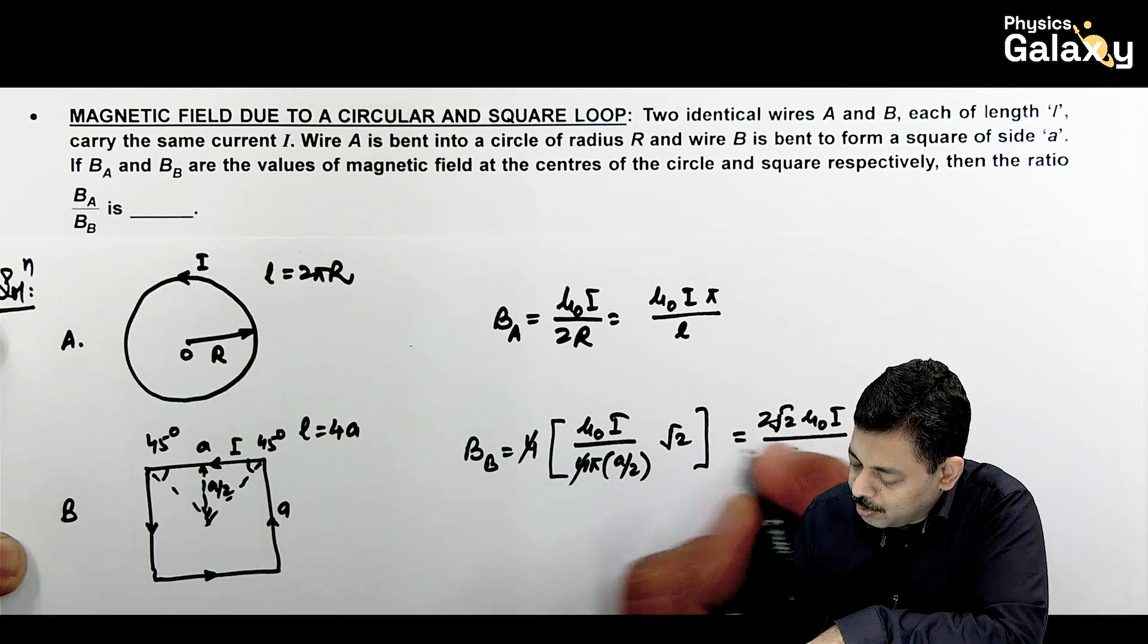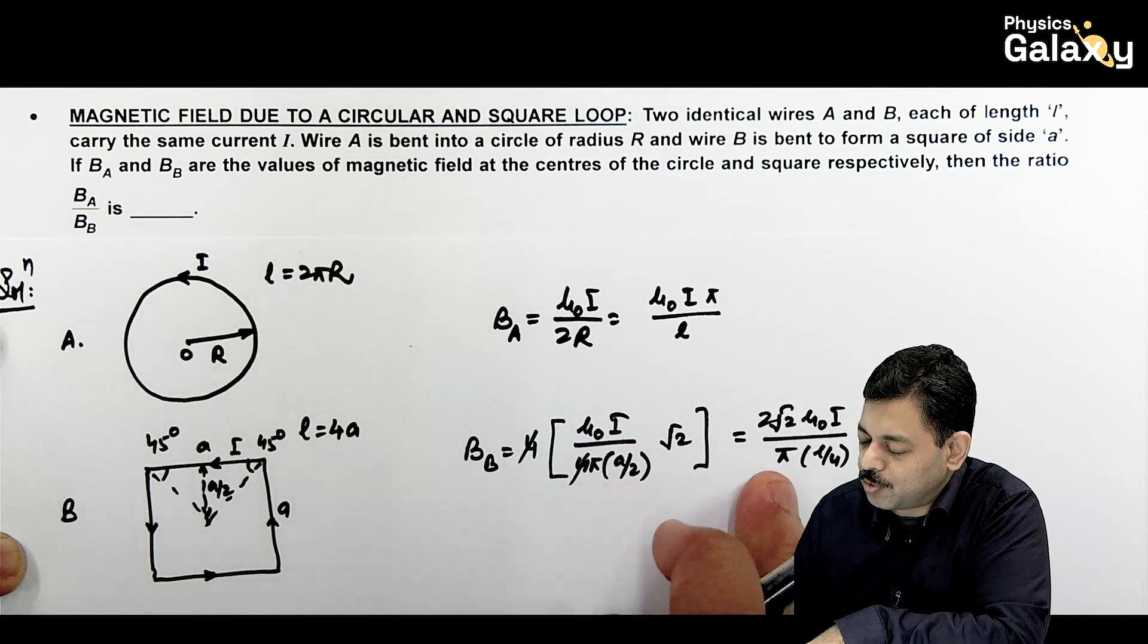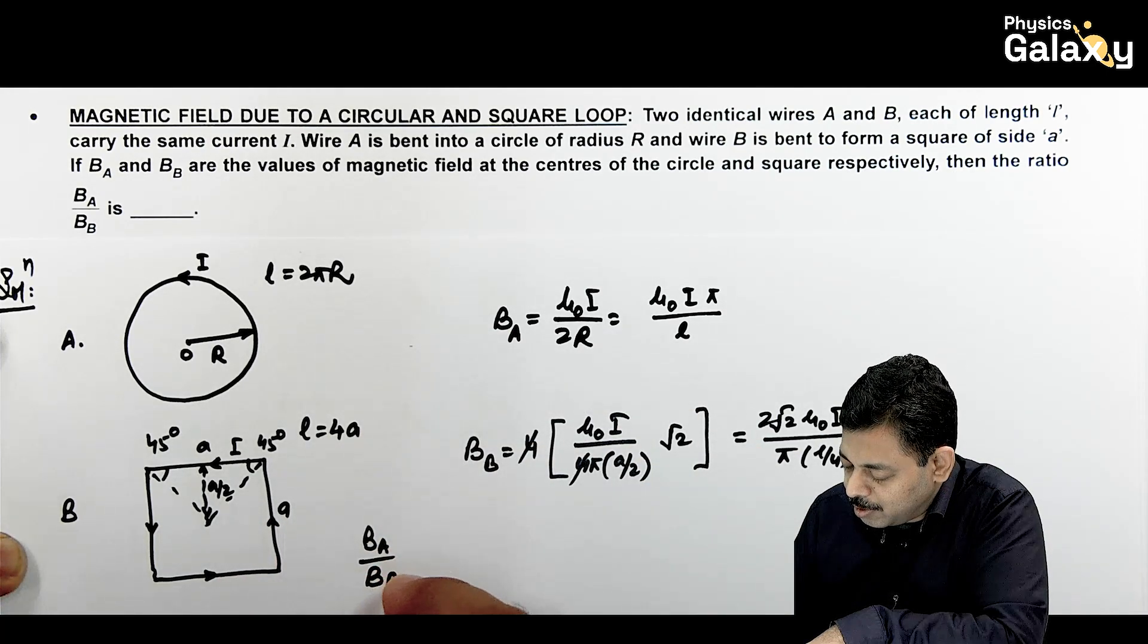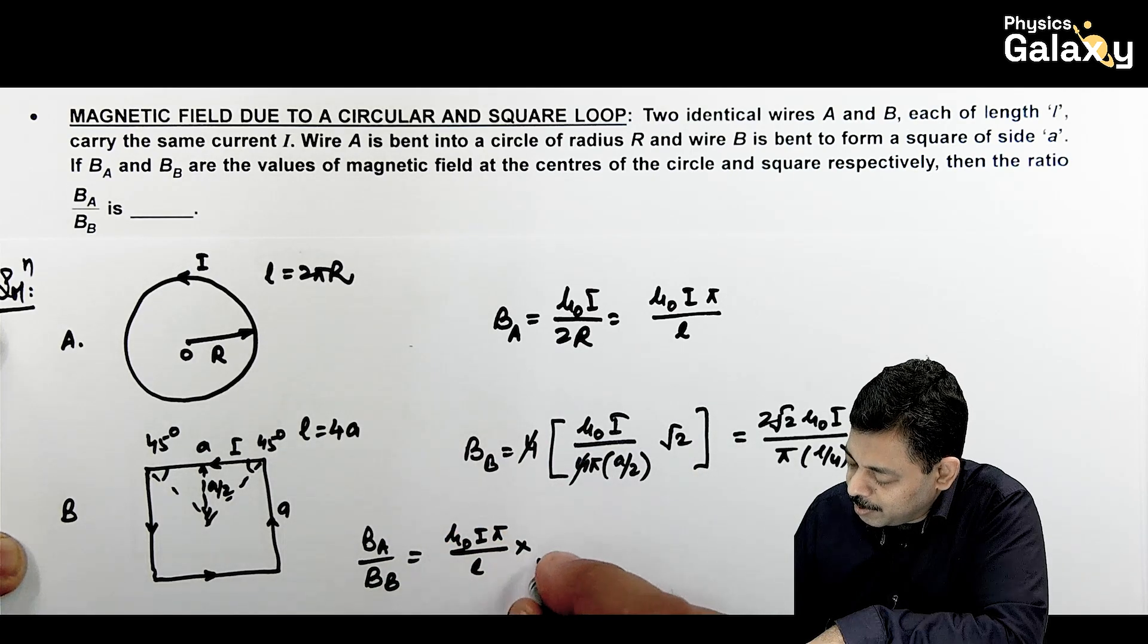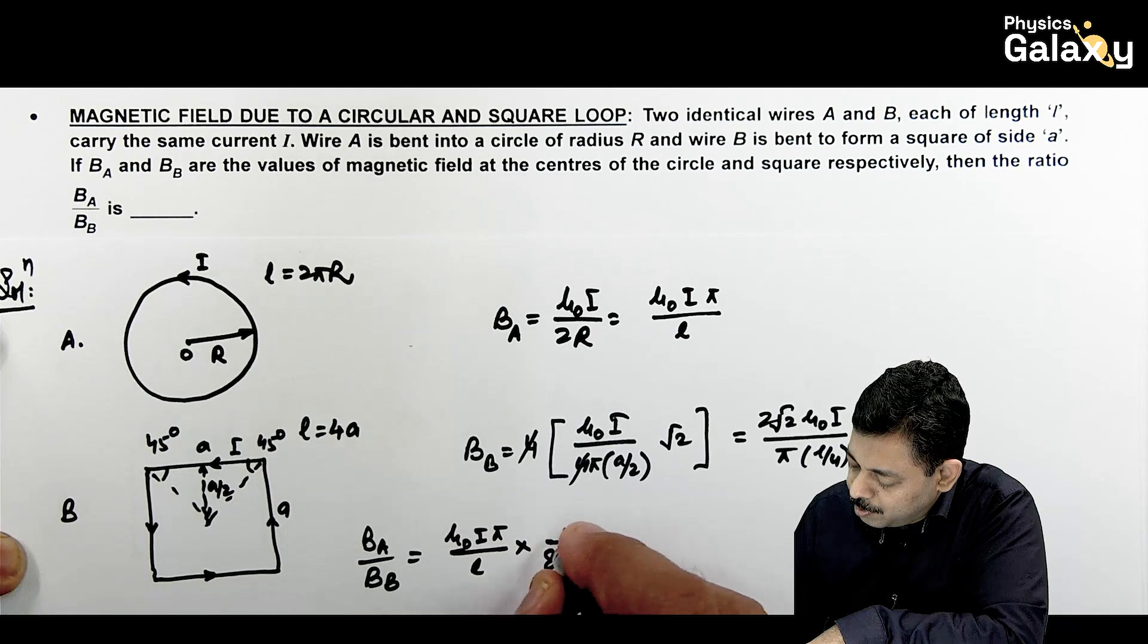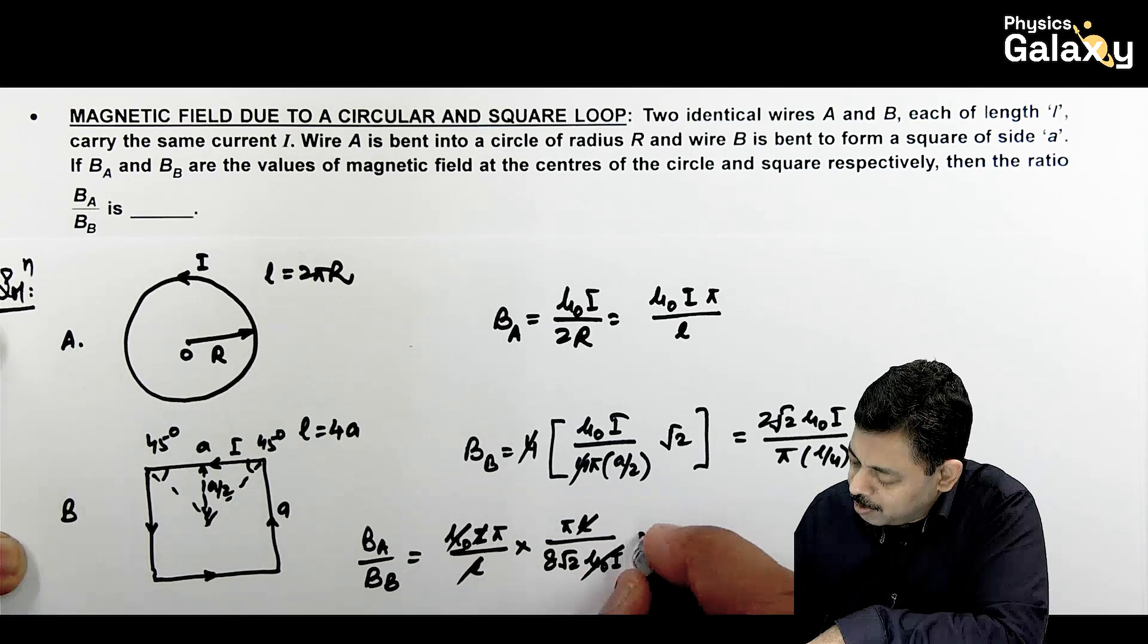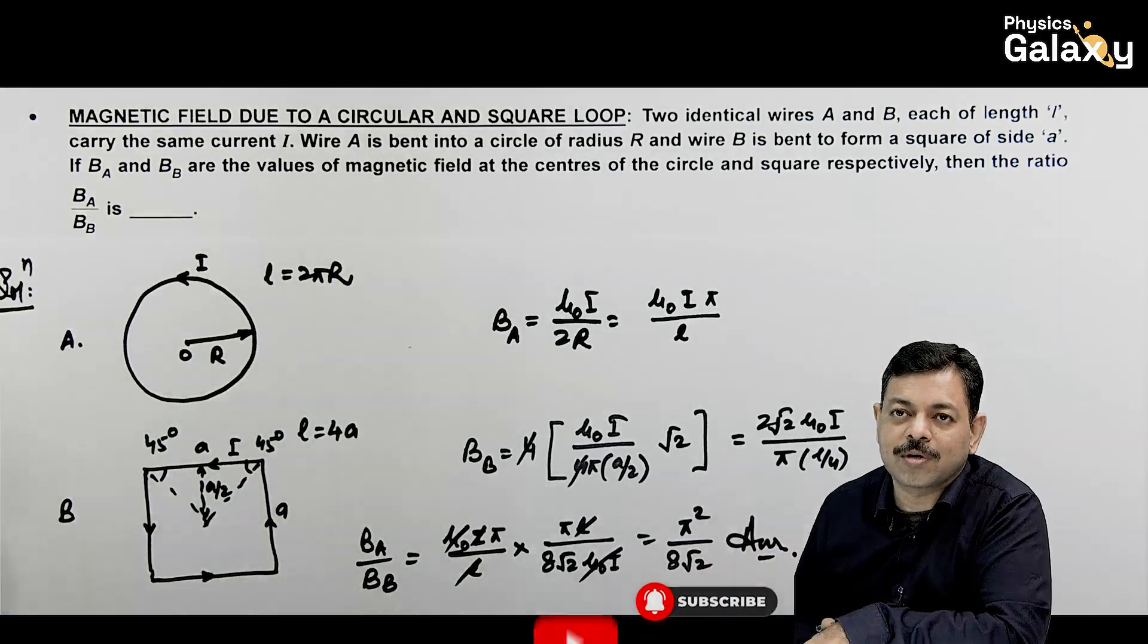So as Ba and Bb are here, we can calculate Ba upon Bb. If we calculate their ratio, this is mu naught i pi by l multiplied by 8 root 2 mu naught i by pi l. Now see, pi and l and mu naught i cancel out. It gives you pi squared divided by 8 root 2. That's the ratio and answer to this case.